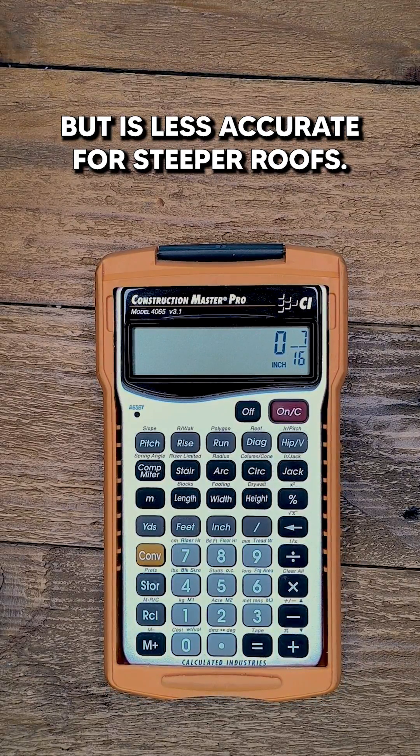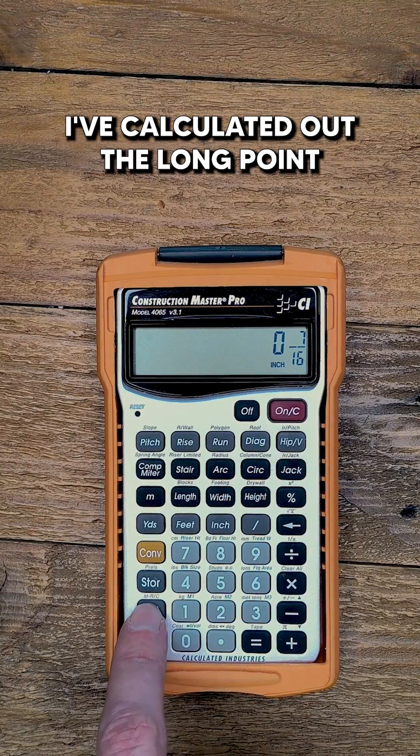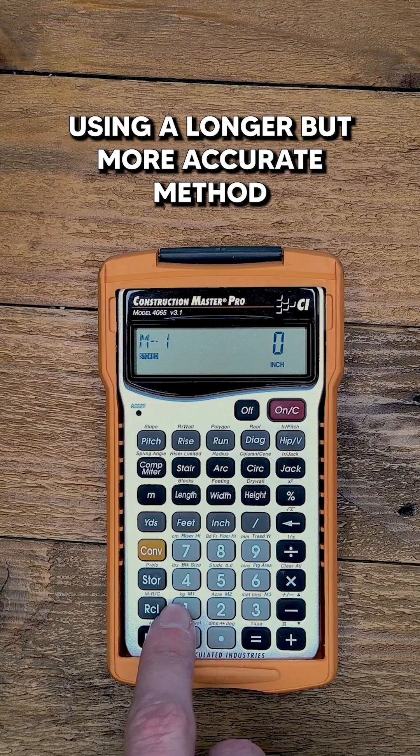a good estimate for lower pitches, but is less accurate for steeper roofs. For example, I've calculated out the long point jack length for a 3 inch pitch using a longer but more accurate method,